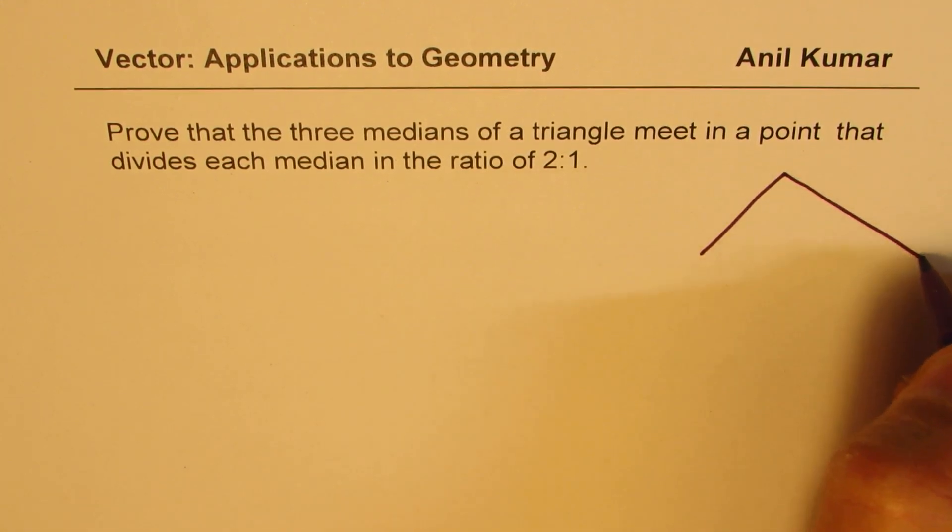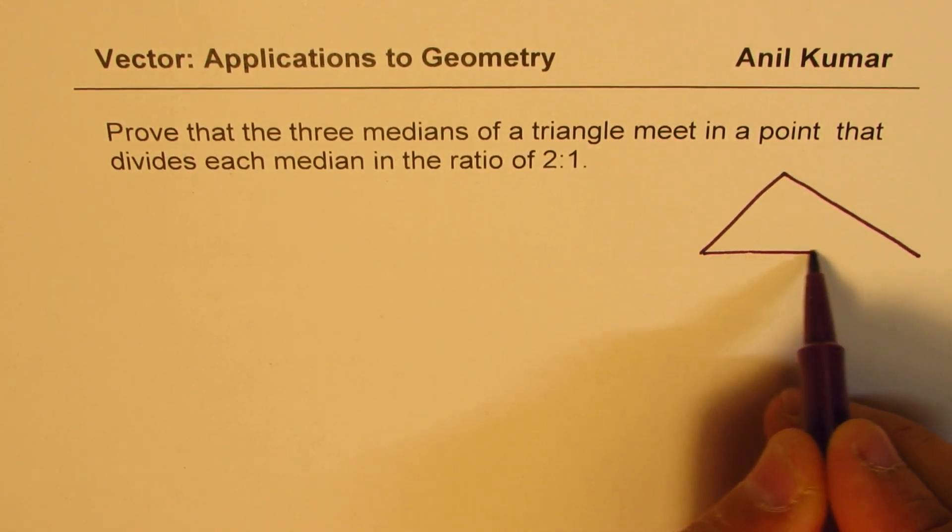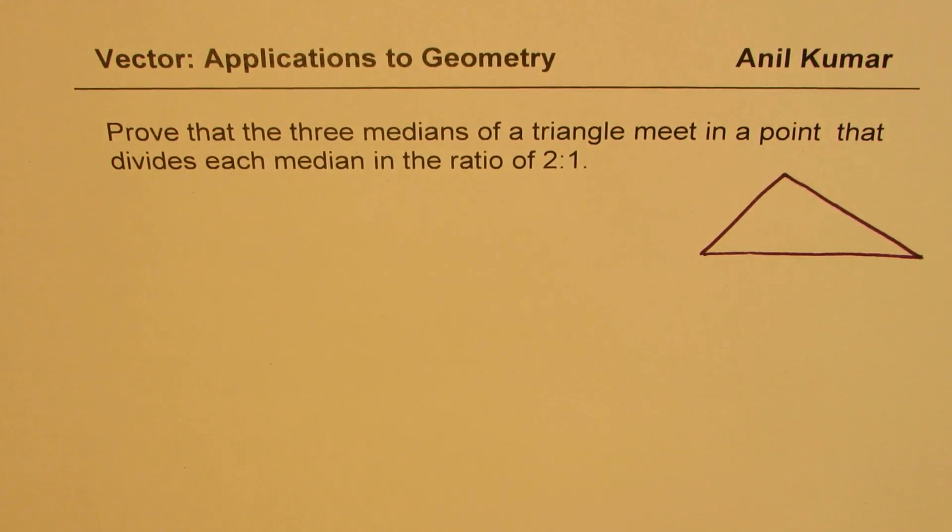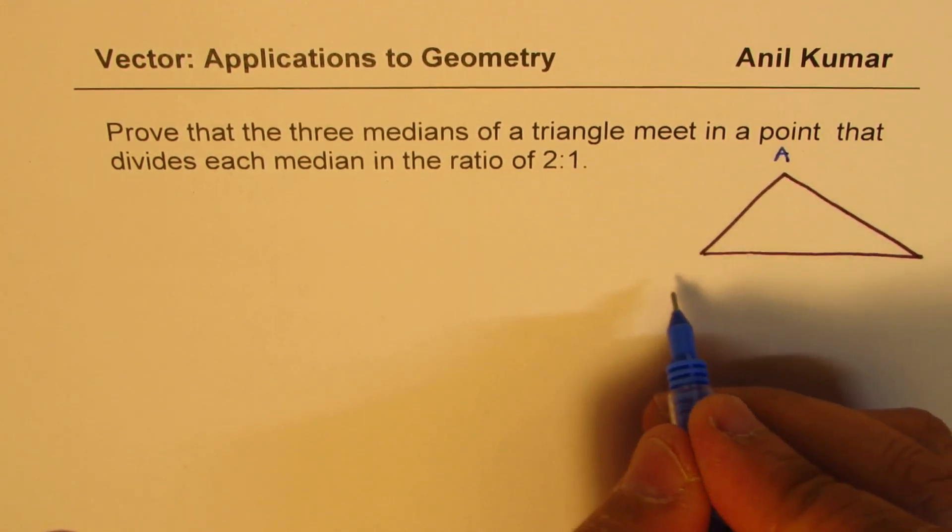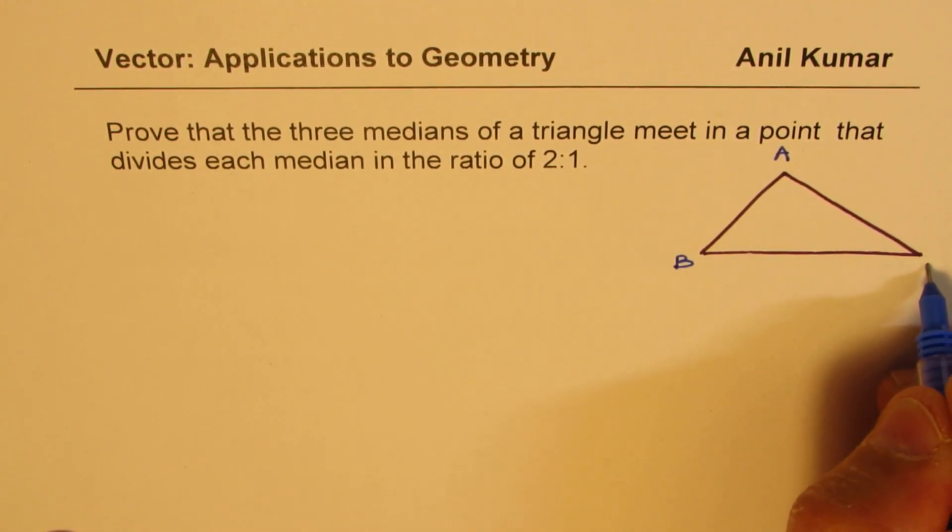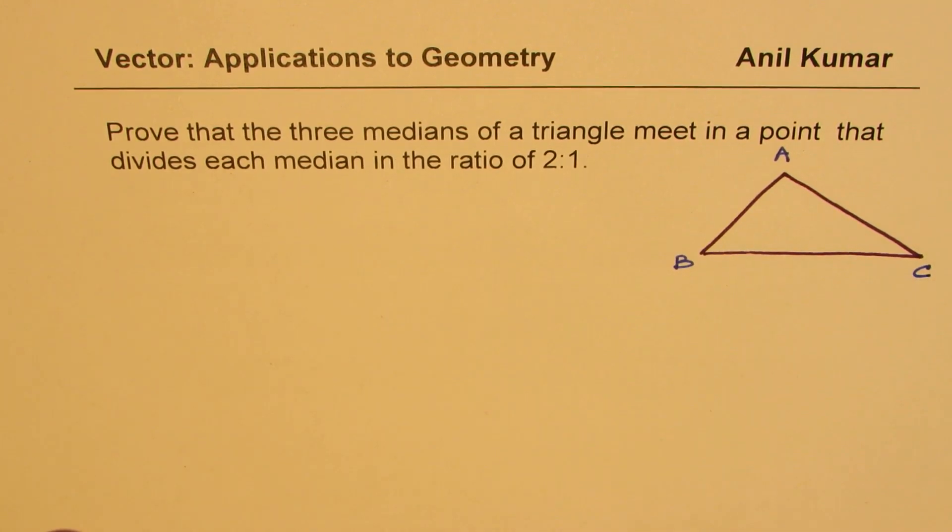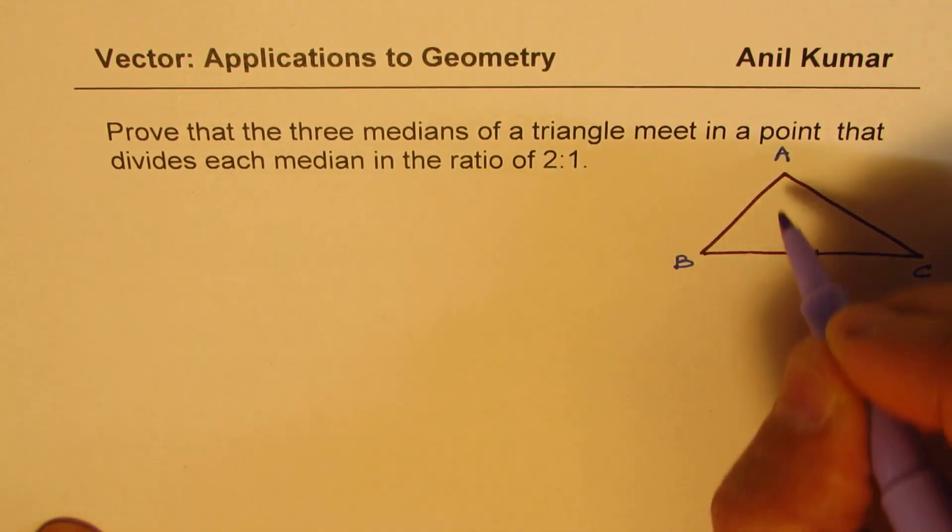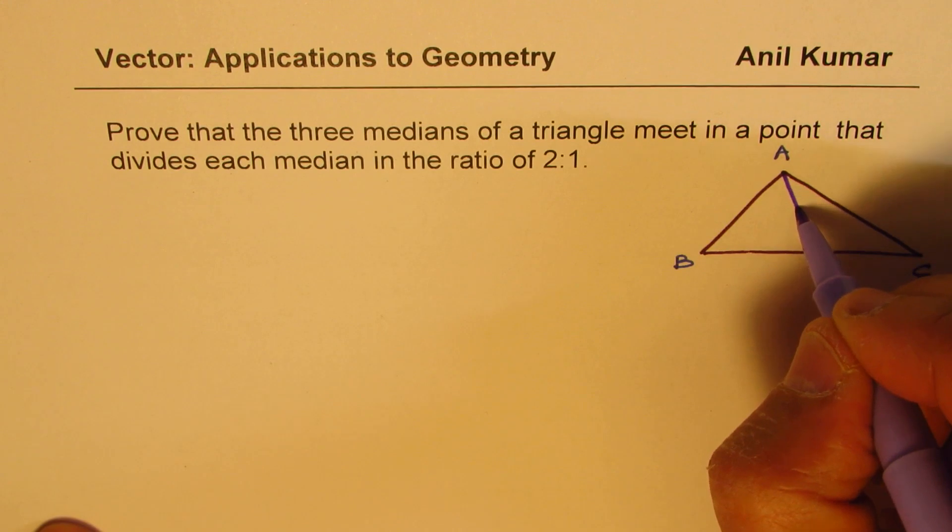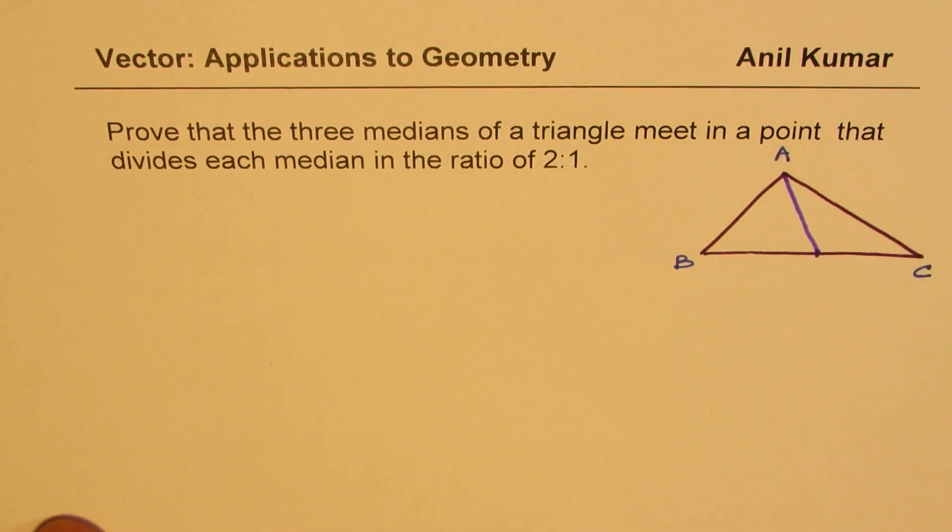Let's sketch one triangle here and call it triangle ABC. We have a triangle ABC. Let us say that A is connected to the midpoint of BC. So this is the midpoint of BC and we join A to the midpoint and this point is D for us.